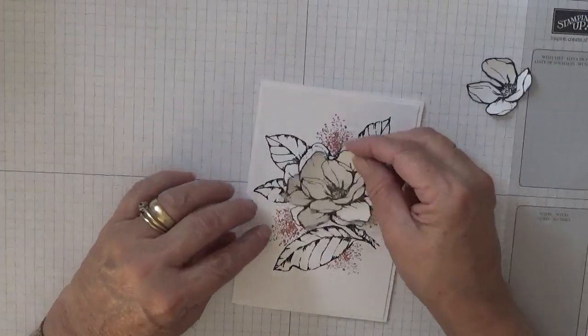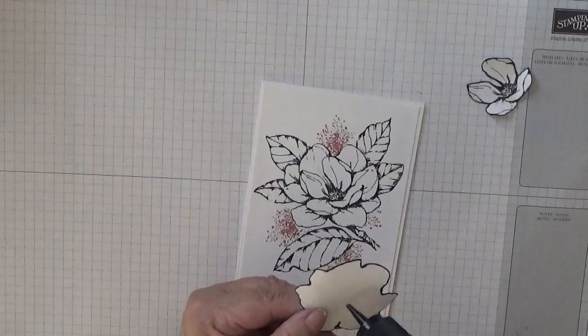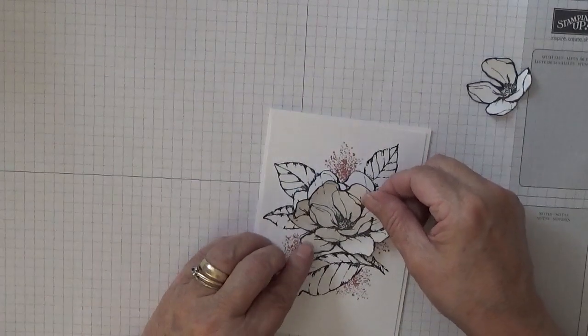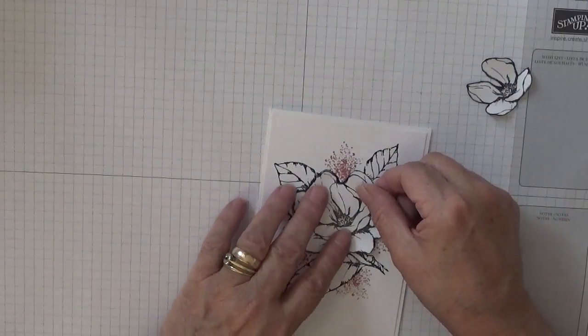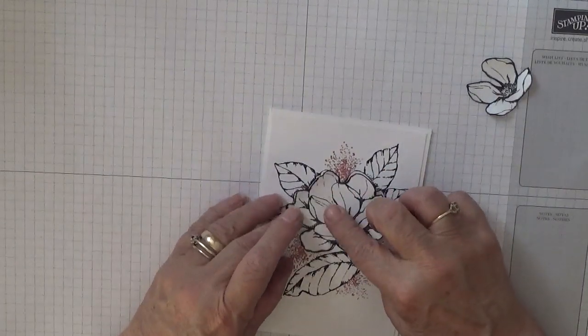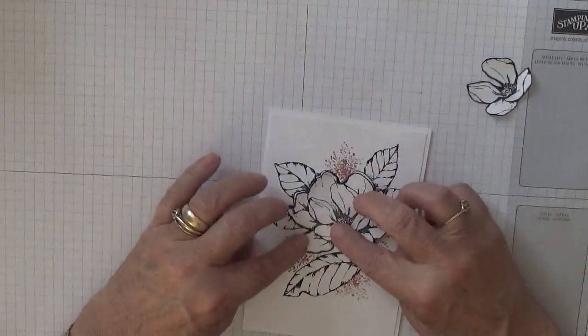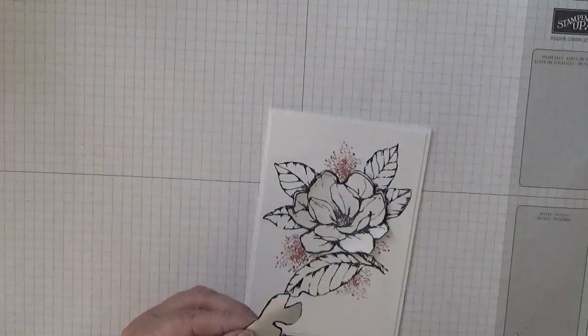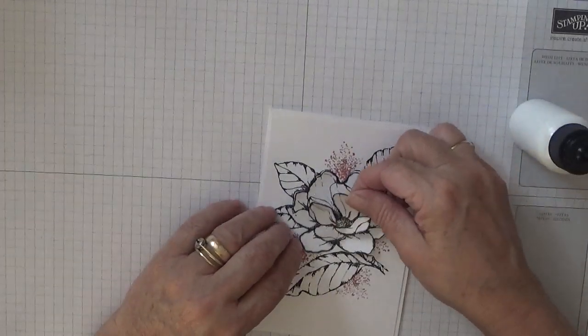And stick the inside in. Now with this, all we're going to do is glue the middle. Just a bit of glue in the middle, and line it up. So if it was laying flat, it would cover the flower underneath. And the same with this. We stick this on top of this one.